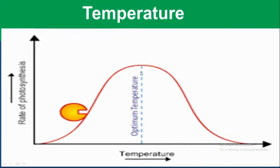At the optimum temperature, the rate of photosynthesis is at its maximum. When temperature is much higher than the optimum, enzyme activity is affected and the rate of reaction decreases.